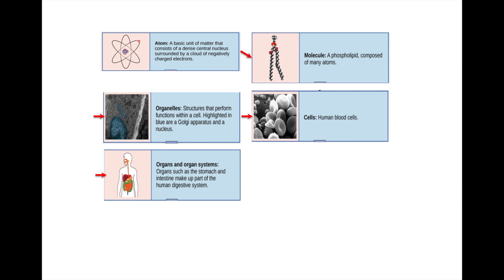Then you put cells together — putting together specialized cells generates an organ. Your stomach is an organ. Then you put all sorts of different organs together and you get an organ system. We're looking at the digestive system, which is made of different individual organs. Each of these organs on their own cannot in isolation support our life, but when you put them together you can use them as a digestive system through which we can chew, eat, absorb material, and then get rid of the extra stuff we don't want.